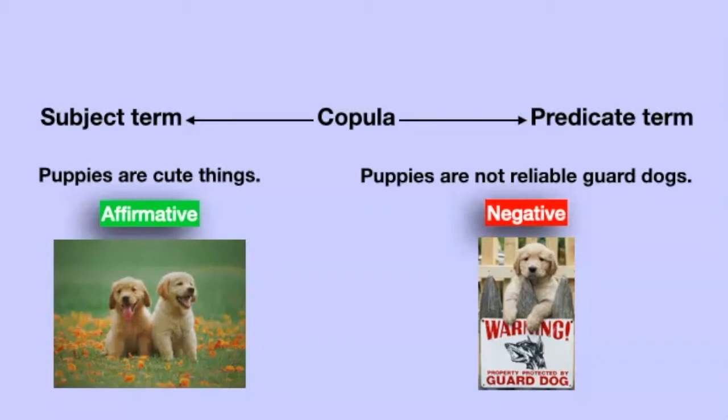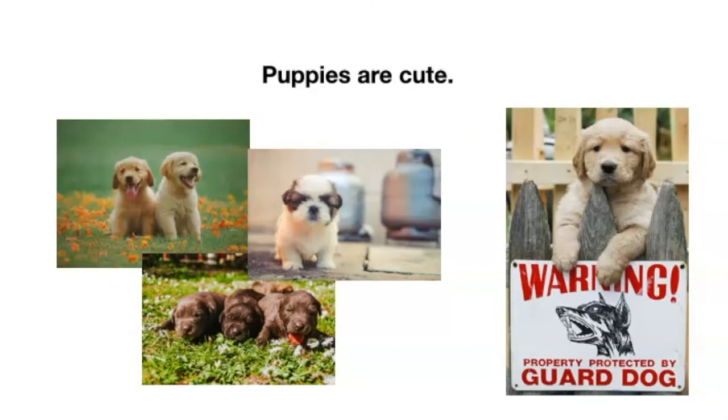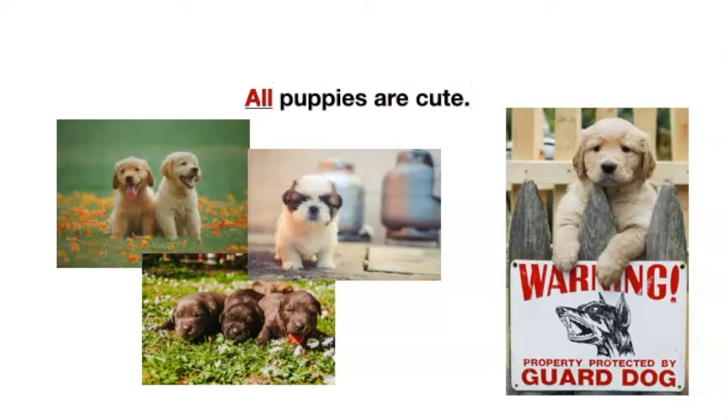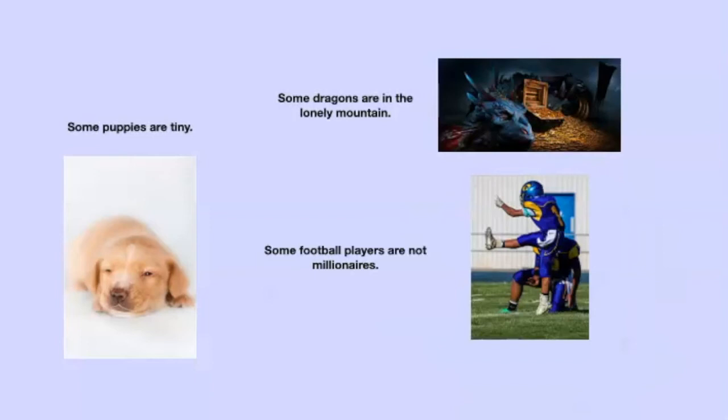This negative or affirmative characteristic is called the quality. The last element of a categorical proposition is called quantity. The subject of 'puppies are cute' is puppies, and it's obvious that we're talking about all puppies — these puppies, these puppies, this puppy, even this puppy. To make this explicit, we would need to add 'all' to the beginning of the sentence. Sometimes we make statements about only some members of a class: some puppies are tiny, some dragons are in the lonely mountain, or some football players are not millionaires.